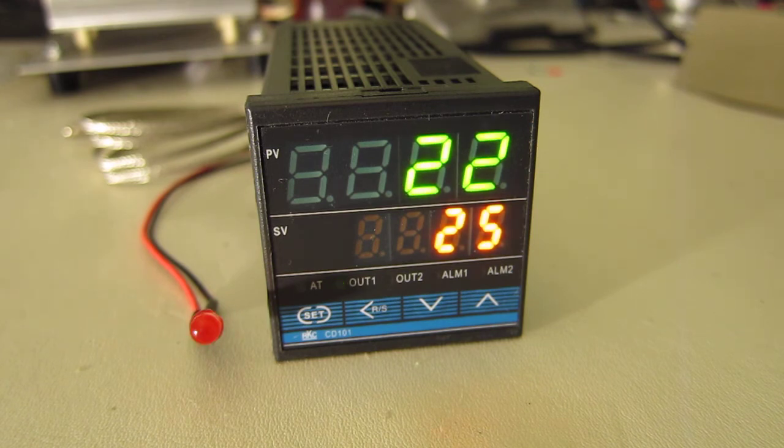So now the PID controller is running and you can see that it's indicating 22 degrees Celsius temperature, which is the room temperature with the thermocouple sitting here on the bench. I've got the set point set to 25 degrees Celsius which is just above the ambient temperature and you can see that the output one light is flashing.